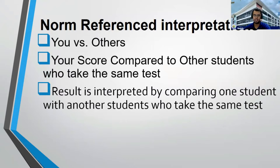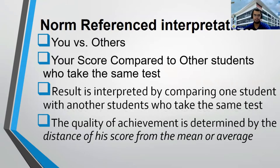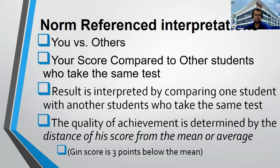The result is interpreted by comparing one student with another student who takes the same test. The quality of achievement is determined by the distance of his score from the mean or average. For example, Gene's score is 3 points below the mean, or Gene's score is 5 points above the mean.